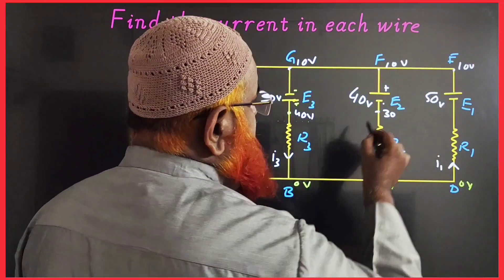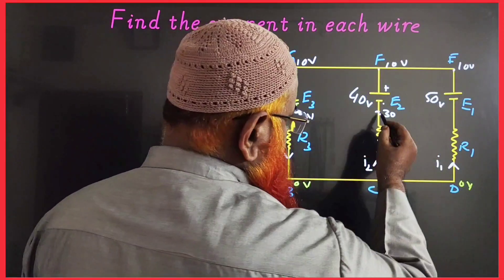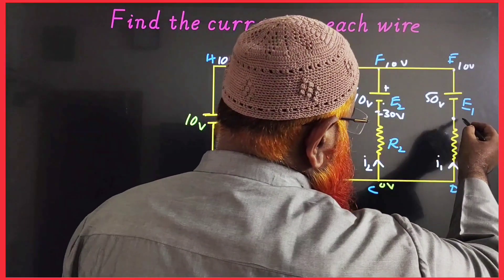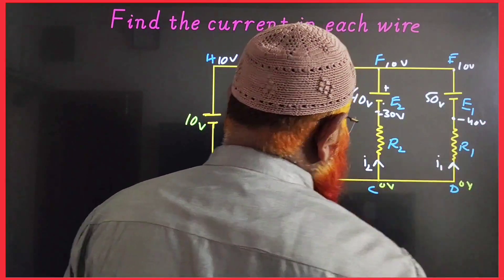That is going to be minus 30. So 10 minus 40 equals minus 30 volts at this point. Here also 10 minus 50 equals minus 40 volts. That's it.